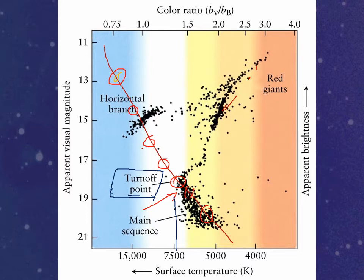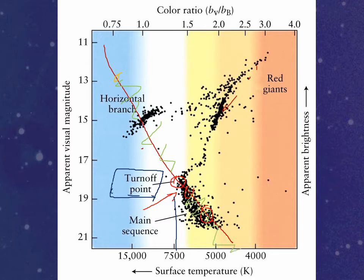If you know how old the stars are that are just now dying, that tells you the age of the star cluster — because all stars that have lifetimes less than that have died, and stars that have lifetimes longer than that are still alive. The stars at the upper end of the HR diagram don't live as long, so they've all died. The stars at the lower end live longer and are still alive. So the stars right at the turnoff point are just now dying, and those stars tell you the age of the star cluster.